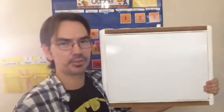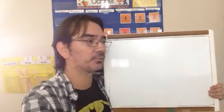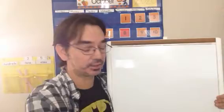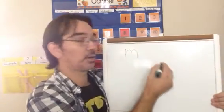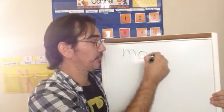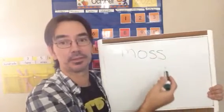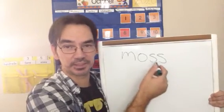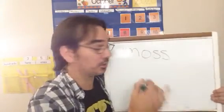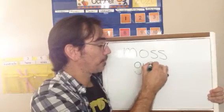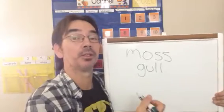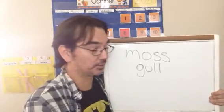So that was some segmenting practice. Now I threw in some words that maybe we haven't used before, but I did it for a reason — because we've been talking about double final consonants. A couple of those words had double final consonants in them. Like moss — there's only three sounds, but it's got a double final consonant. That means there are two of a final consonant. In this case it's two S's. And goll — K-l — three sounds but four letters because of the double final consonant.